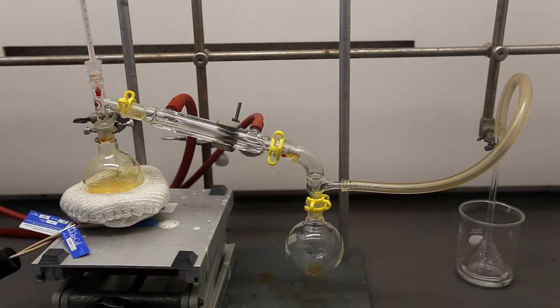When the distillate changes from milky white to reddish brown, the collecting flask and the trap must be changed. Replace the collecting flask with a clean, empty round-bottom flask, and replace the NaOH trap with a small amount of water.